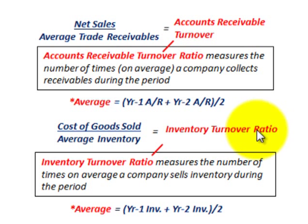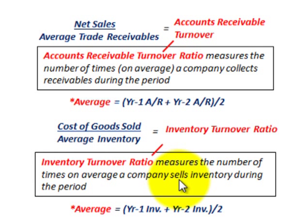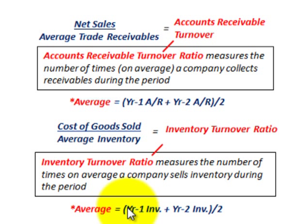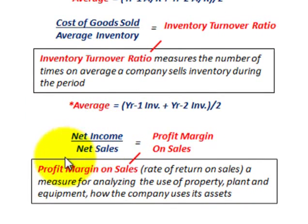Now let's look at the inventory turnover ratio — that is cost of goods sold divided by average inventory. This measures the number of times on average a company sells inventory during the period. Average inventory is calculated by taking year one inventory plus year two inventory from a comparative balance sheet and dividing by two.